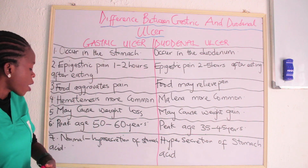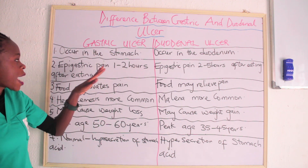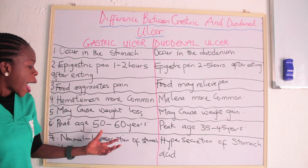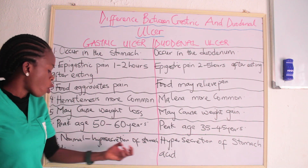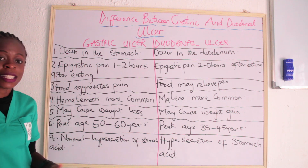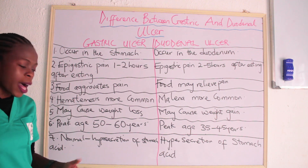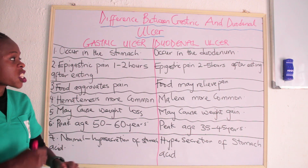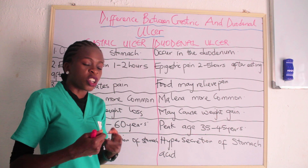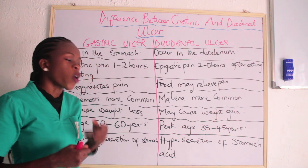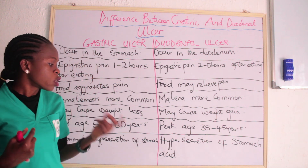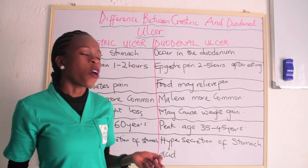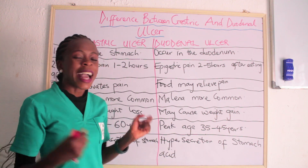The last difference is stomach acid secretion. In gastric ulcer, there is normal to hyposecretion of stomach acid — that is your HCL — it could be normal or low. But in duodenal ulcer, there is hypersecretion of stomach acid.